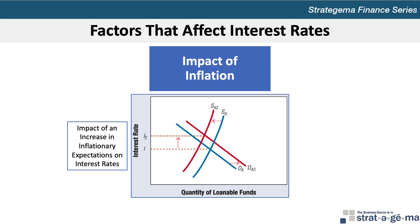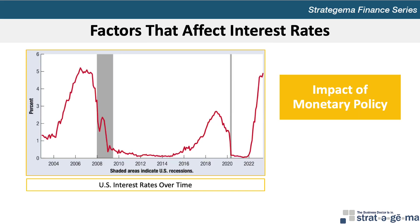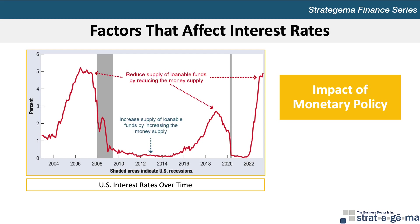The Federal Reserve can affect the supply of loanable funds by increasing or reducing the total amount of deposits held at commercial banks or other depository institutions. When the Fed revises the money supply, it revises the supply of loanable funds, which affects interest rates. To reduce the money supply, the Fed reduces the supply of loanable funds in the banking system. Assuming no change in demand, this action places upward pressure on interest rates.